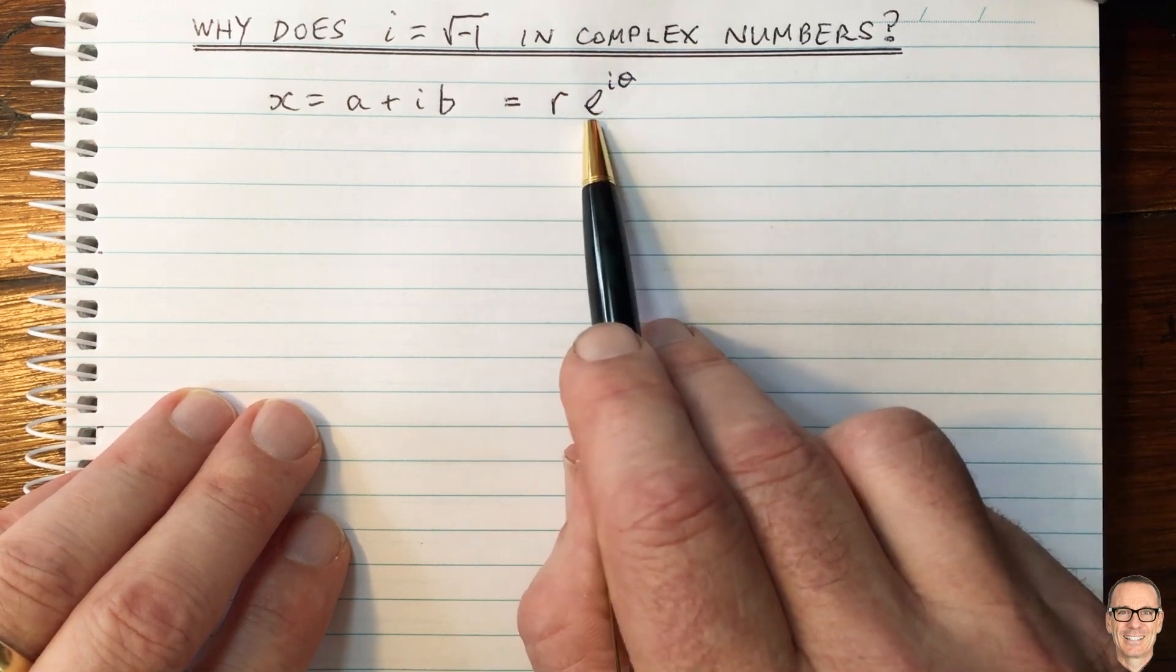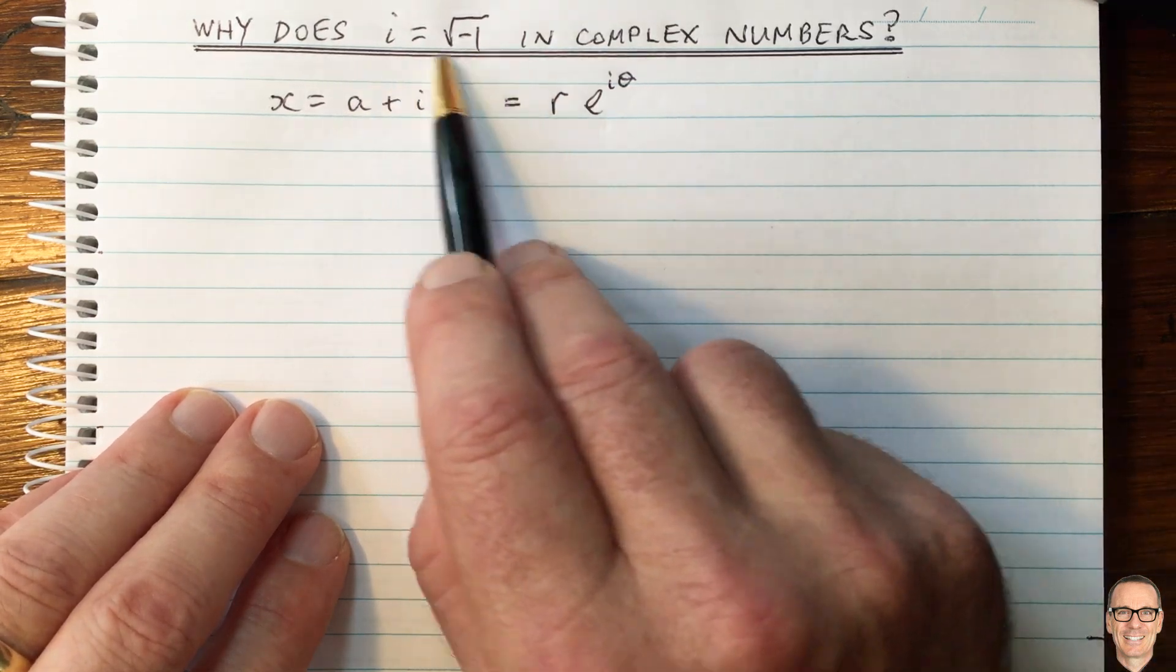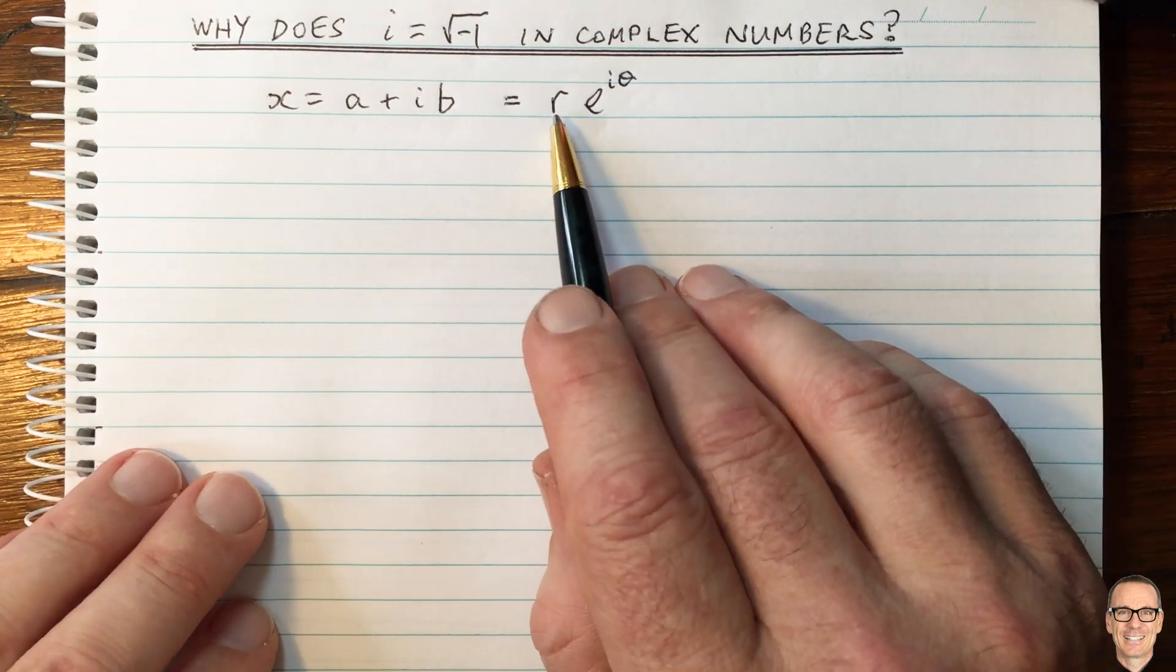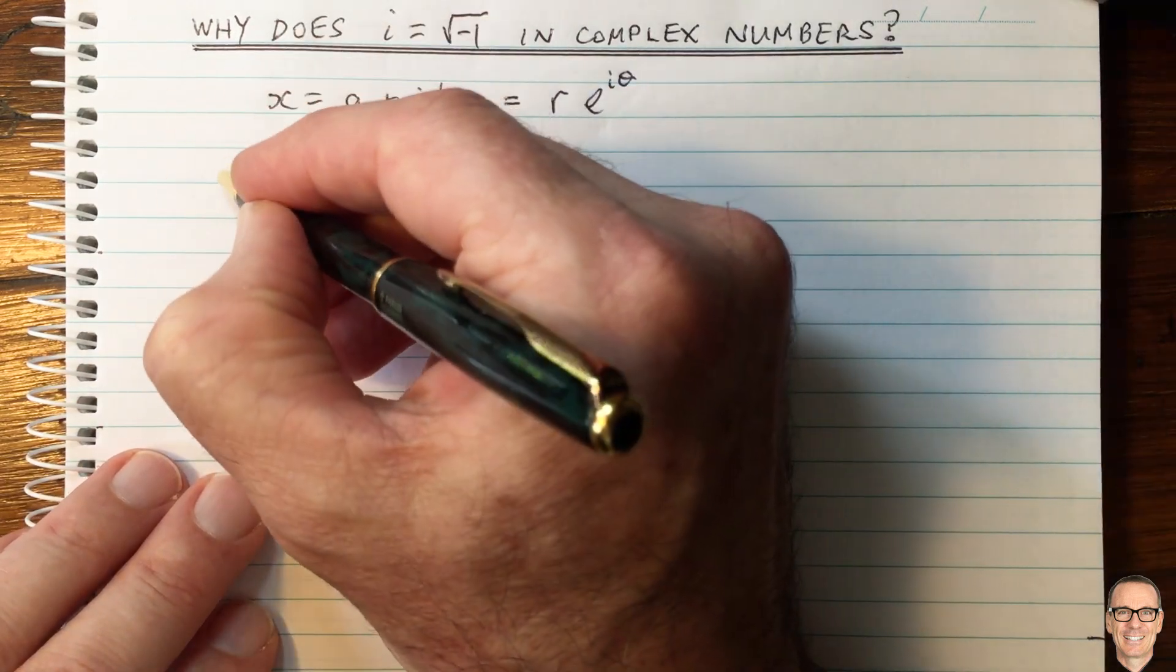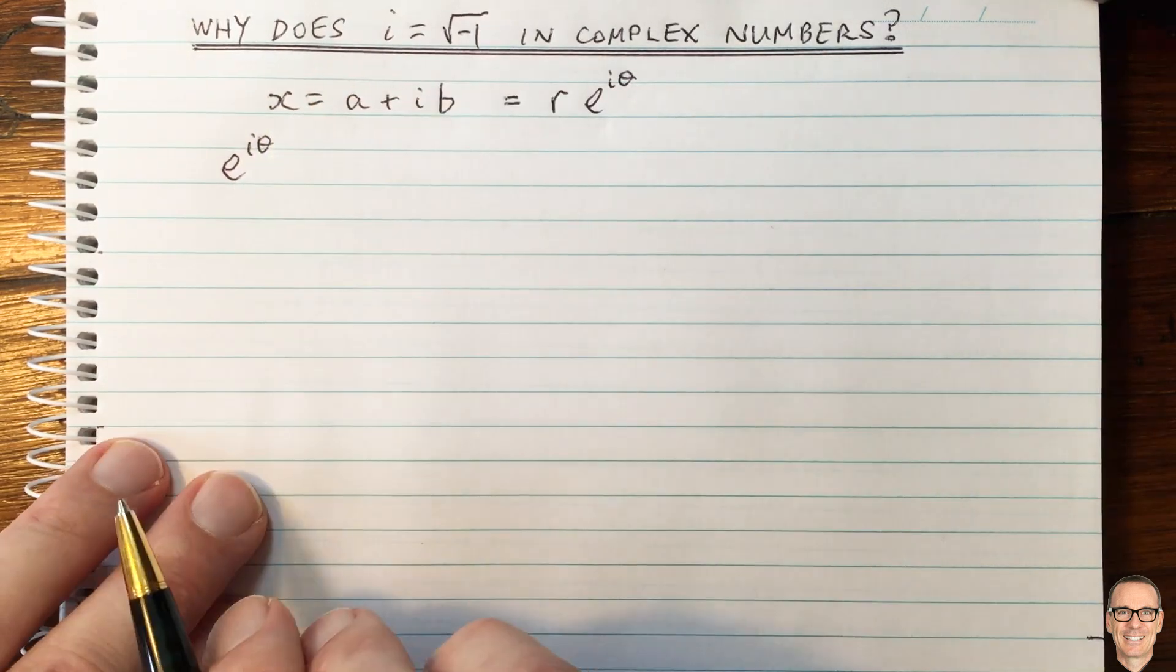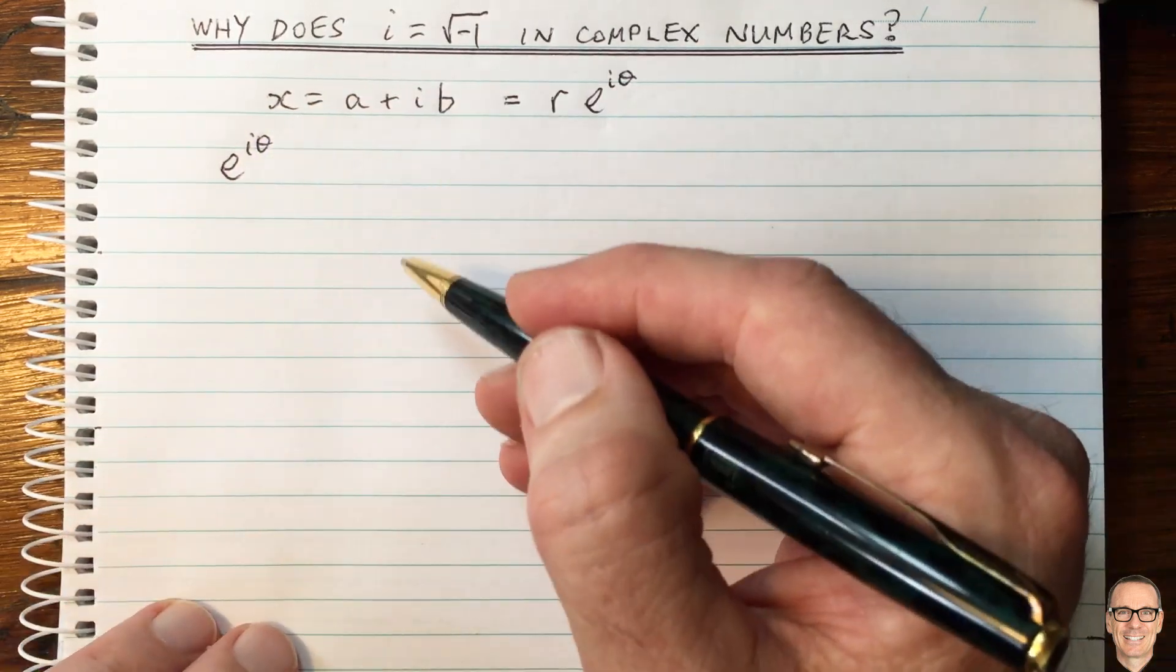But to now use it to understand this property here, that i equals the square root of minus 1, let's start by considering the case when r equals 1. Then we have the complex number e to the i theta. Now let's think about that graphically.